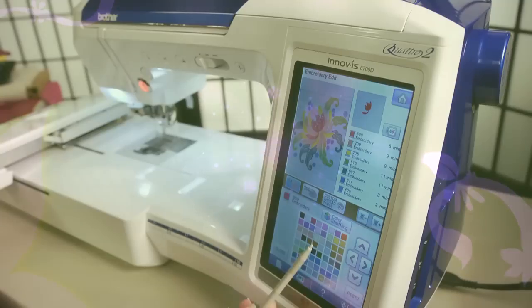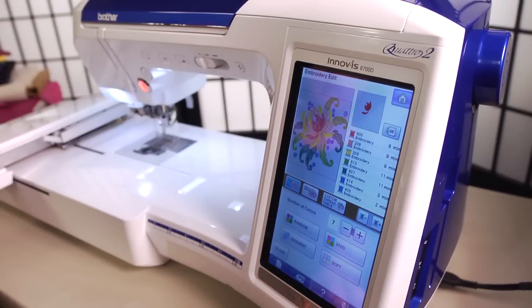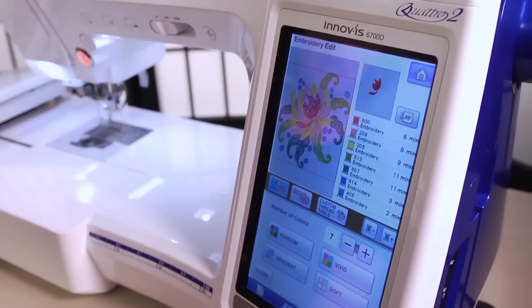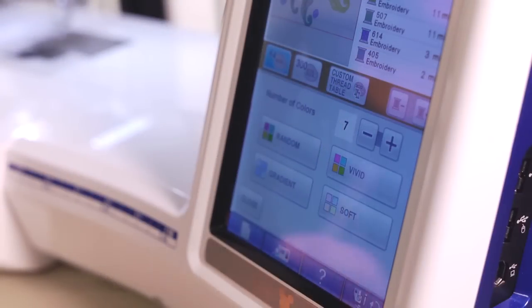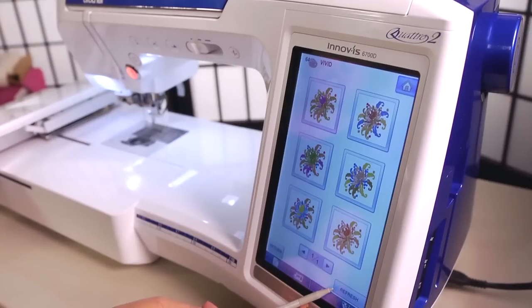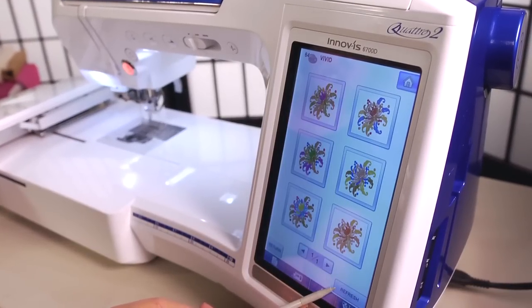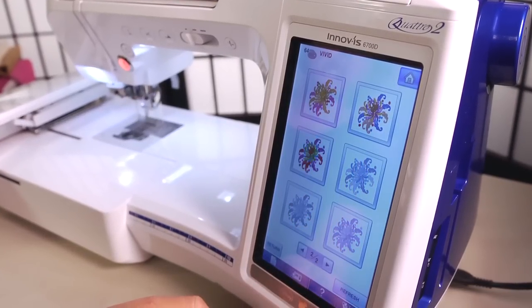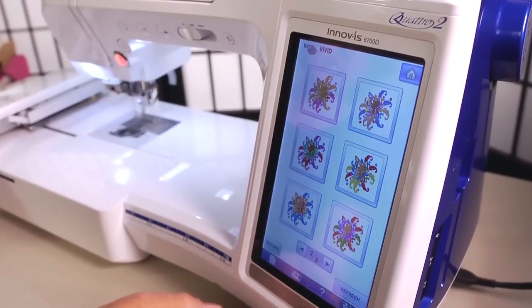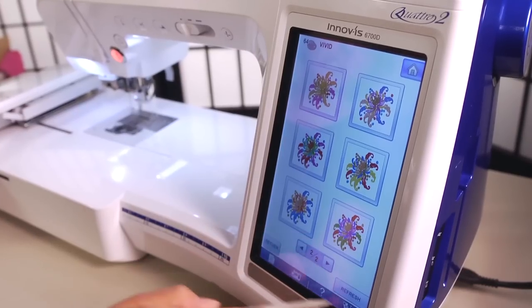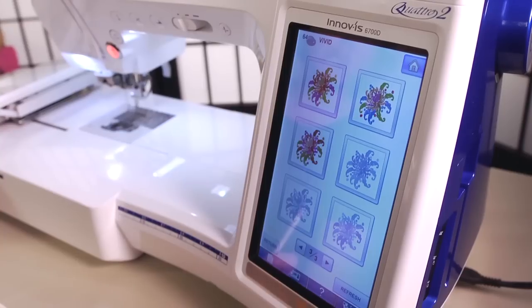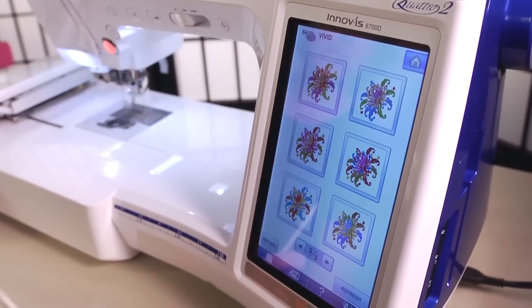Simply select any design, touch the color shuffling icon, and a brilliant array of four different color schemes appear. Choose from random, vivid, gradient, or soft. Once you select a scheme, Quattro 2 will deliver a range of palette choices. Don't like what the machine offers? Shuffle again and again until you get a scheme that works with your fabric and suits your tastes.